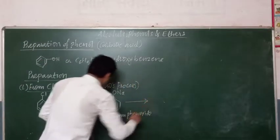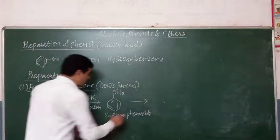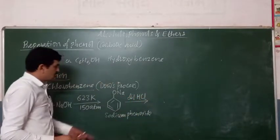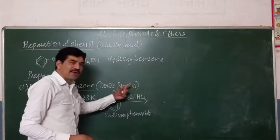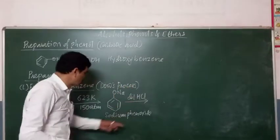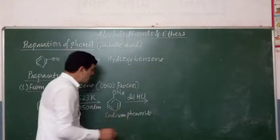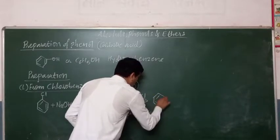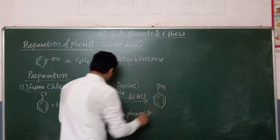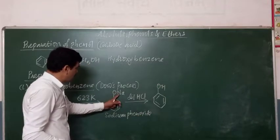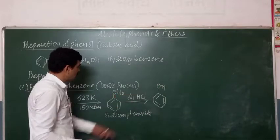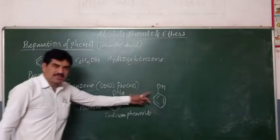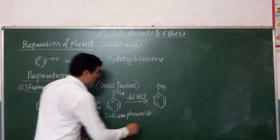After that, this sodium phenoxide is reacted with dilute HCl. Then sodium phenoxide is converted into phenol. Na gets replaced by H, plus NaCl is formed. There is a formation of NaCl, and this is phenol.